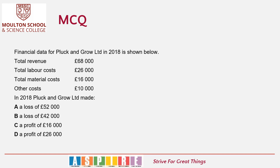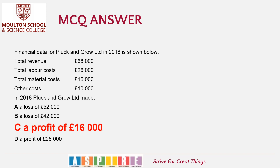Pluck and Grow have given you some financial information. In 2018, did Pluck and Grow make: A: a loss of £52,000; B: a loss of £42,000; C: a profit of £16,000; or D: a profit of £26,000? The answer to this question is C — they made a profit of £16,000. You'd work that out by taking the three different costs away from total revenue: 68,000 minus 26,000 plus 16,000 plus 10,000.